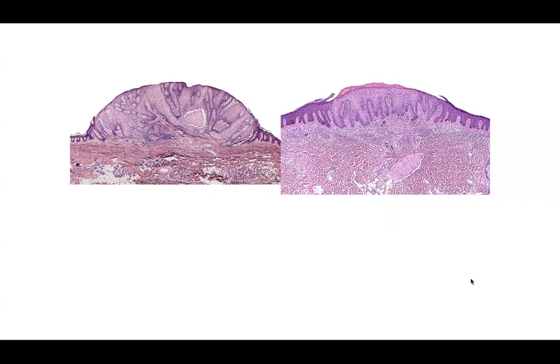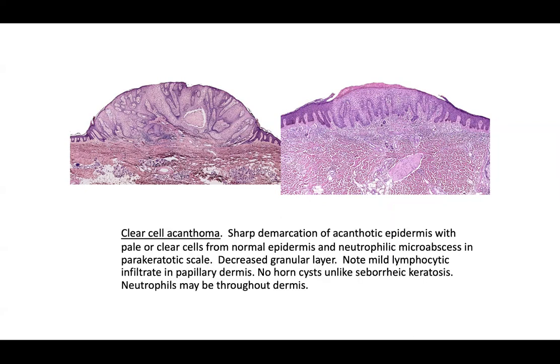Is this inflammatory or is this a neoplasm? In both pictures you should appreciate a very well-demarcated change — an abrupt change from normal-appearing keratinocyte cytoplasm to a diffusely clear change in the cytoplasm. You have hypogranulosis and overlying parakeratosis, and some papillary plates are very thin. This is a single lesion with abundant clear cell cytoplasm — clear cell acanthoma. Sharp demarcation of the acanthotic epidermis is definitive for this diagnosis.